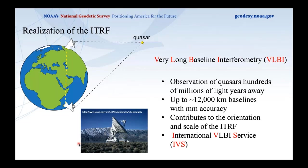The first technique is Very Long Baseline Interferometry, VLBI. VLBI uses radio telescopes to observe quasars — stellar objects hundreds of millions of light years away. Radio telescopes in different parts of the world observe the same quasar simultaneously, forming baselines up to 12,000 km long. This provides millimeter-level resolution over those enormous distances, which is very helpful for defining the orientation of the ITRF. VLBI also contributes to the realization of the ITRF's scale.